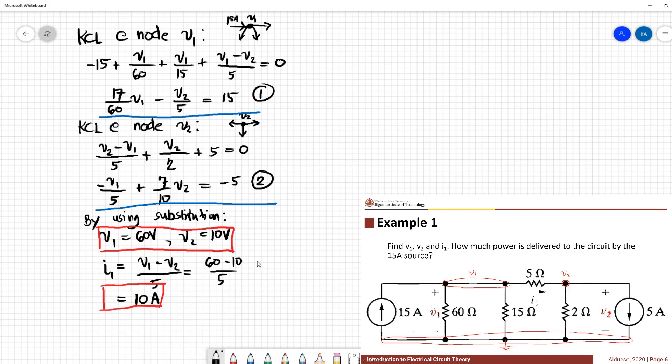And how much power is delivered to the circuit by the 15 amperes source? So power at the 15 amperes source is negative V1 times 15. We have 60 times 15, we have 900 watts.